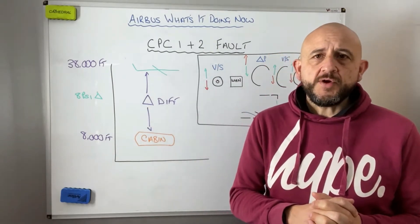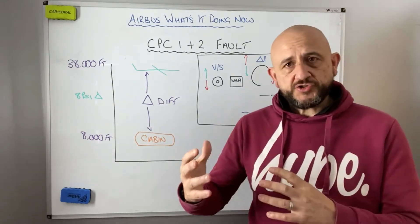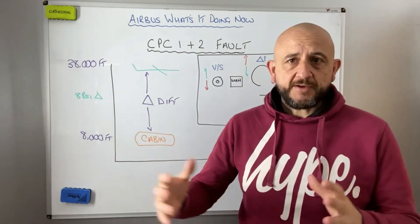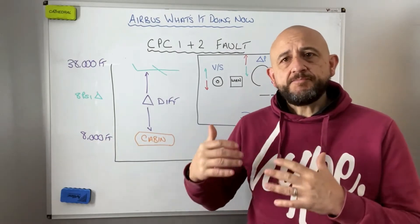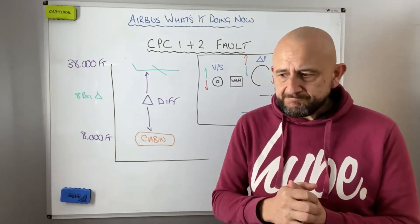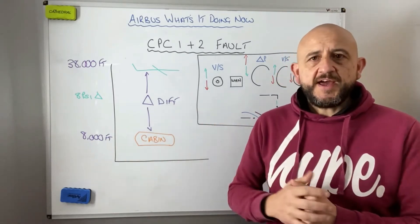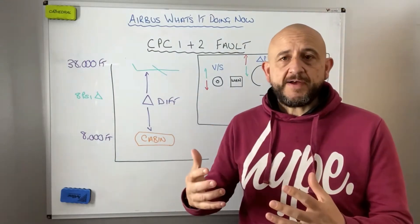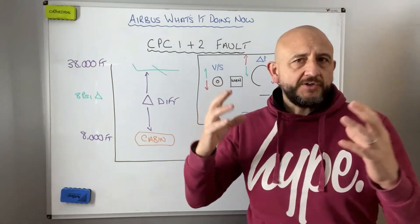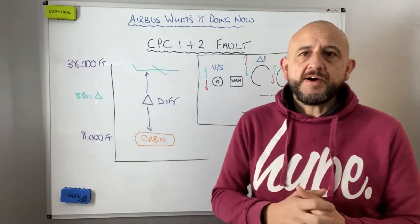We'll review what the CPCs do, how the pressure controllers manage a pressurization profile during a flight, and what happens when both fail — how we interact with the system and what we're trying to achieve. I'll start with a system overview and the controls, then look at the effects of our intervention, hopefully giving you a mental model of what's actually going on to help improve the outcome of the event.